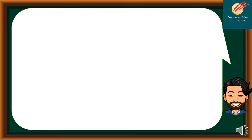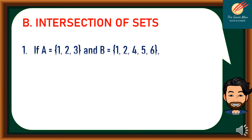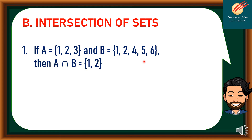Example number one: if A is equal to {1, 2, 3} and B is equal to {1, 2, 4, 5, 6}. Taking the common elements between A and B, therefore A intersection B is equal to {1, 2}.